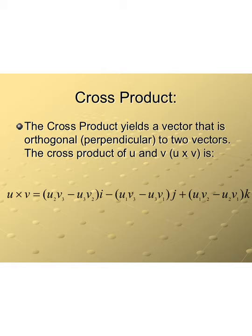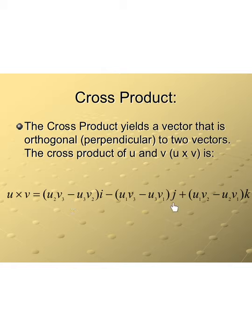If we are actually finding the cross product, then the cross product of u and v is equal to (u2·v3 − u3·v2)i, minus (u1·v3 − u3·v1)j, and then finally (u1·v2 − u2·v1)k. Each inside portion yields a scalar value, which is then multiplied by the unit vector i, j, or k to produce a vector orthogonal to the original two vectors.